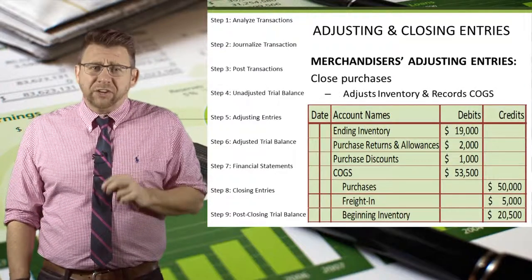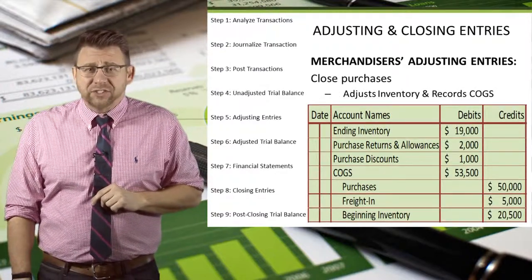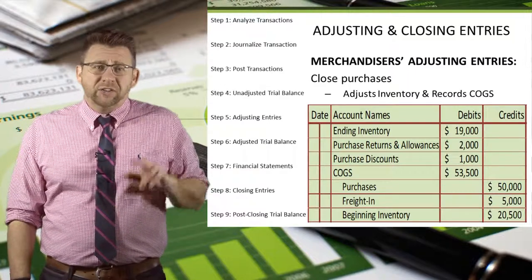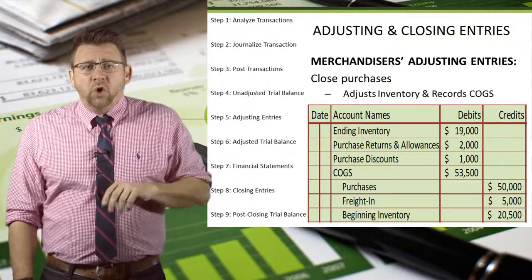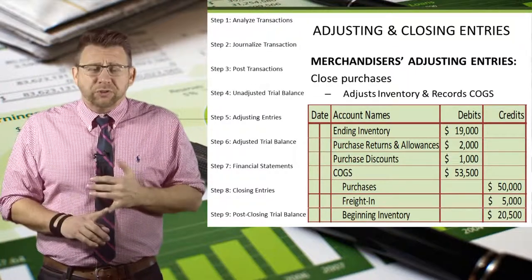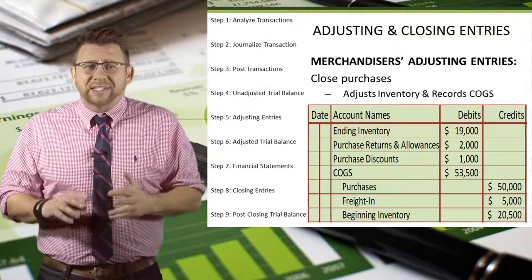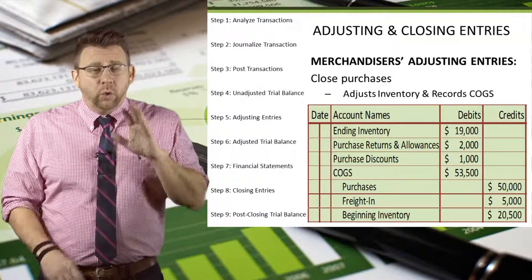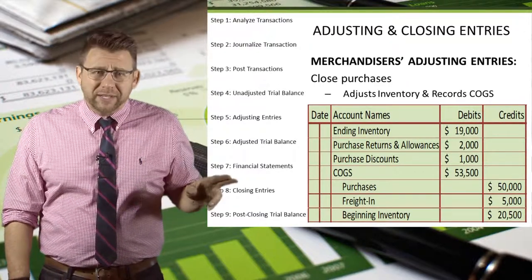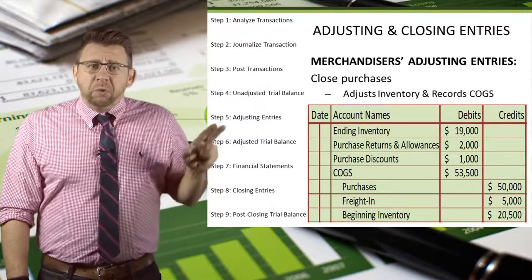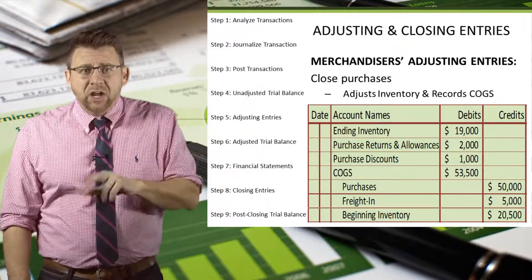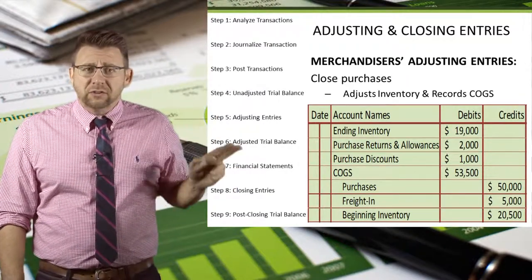The adjusting entry that results from using the cost of goods sold model is a doozy — let's break it down into simpler terms. We need to close all of the purchase accounts. So purchase returns and allowances and purchase discounts, which have normal credit balances, are closed with debits. Purchases and freight in, which have normal debit balances, are closed with credits.